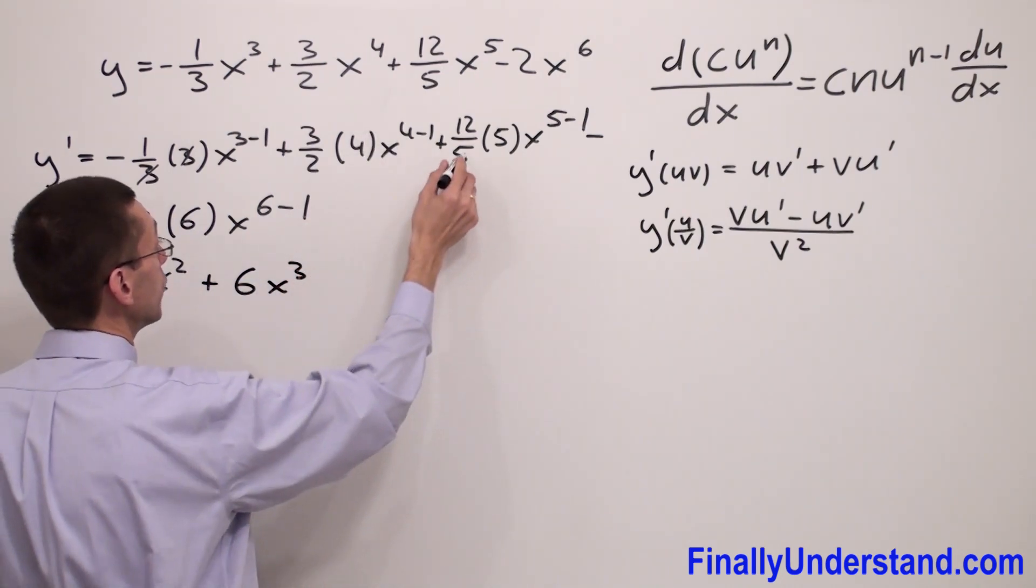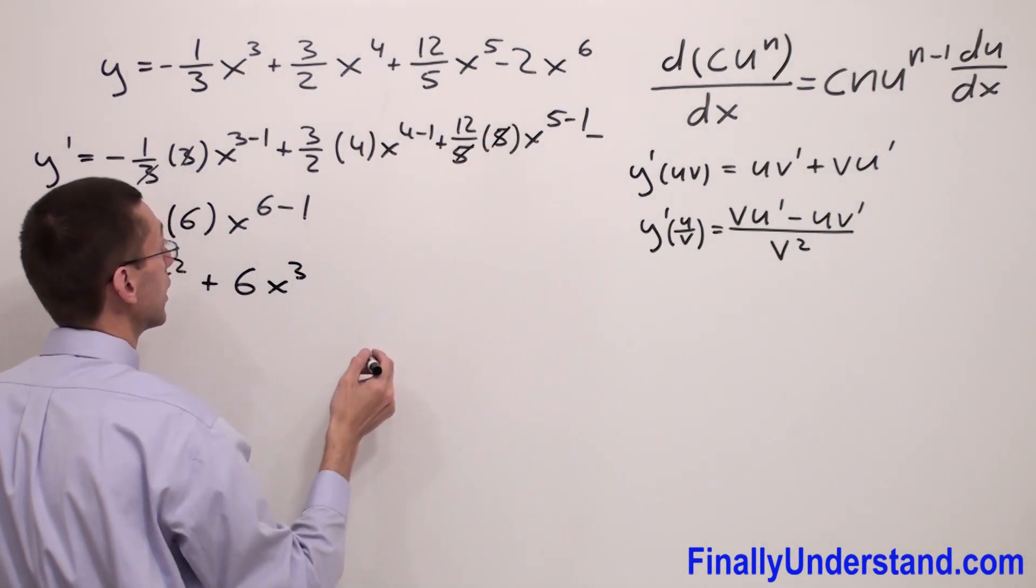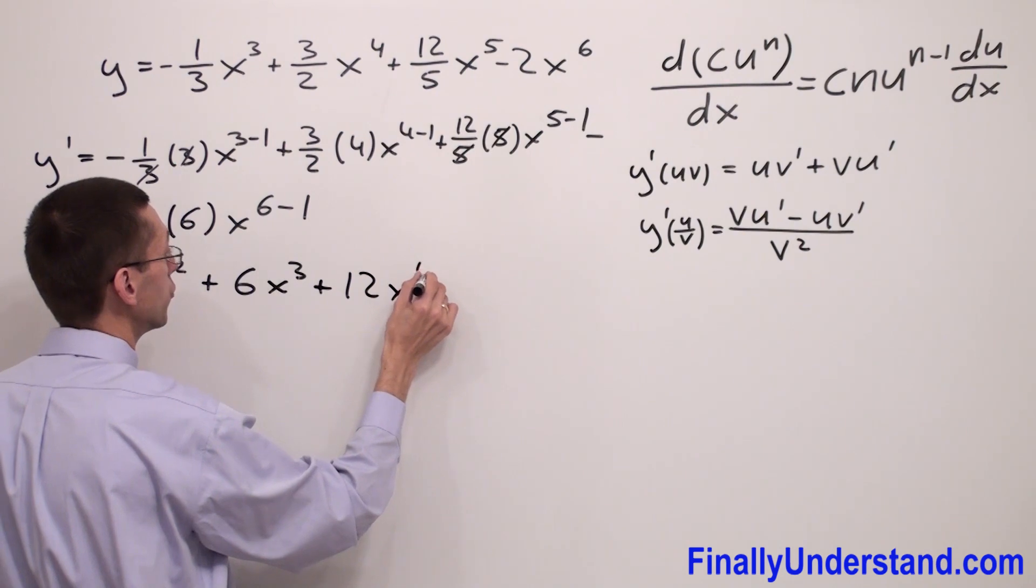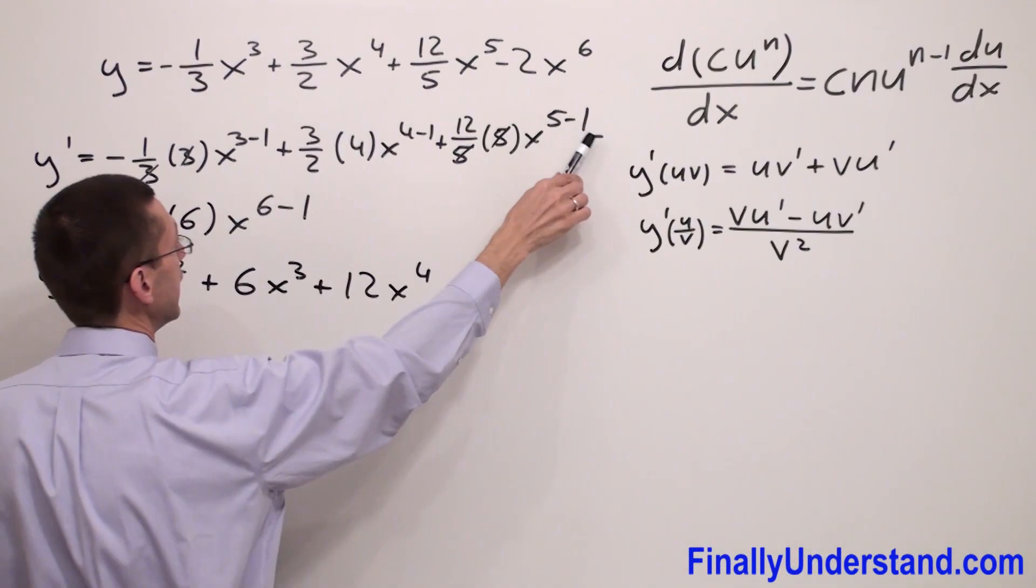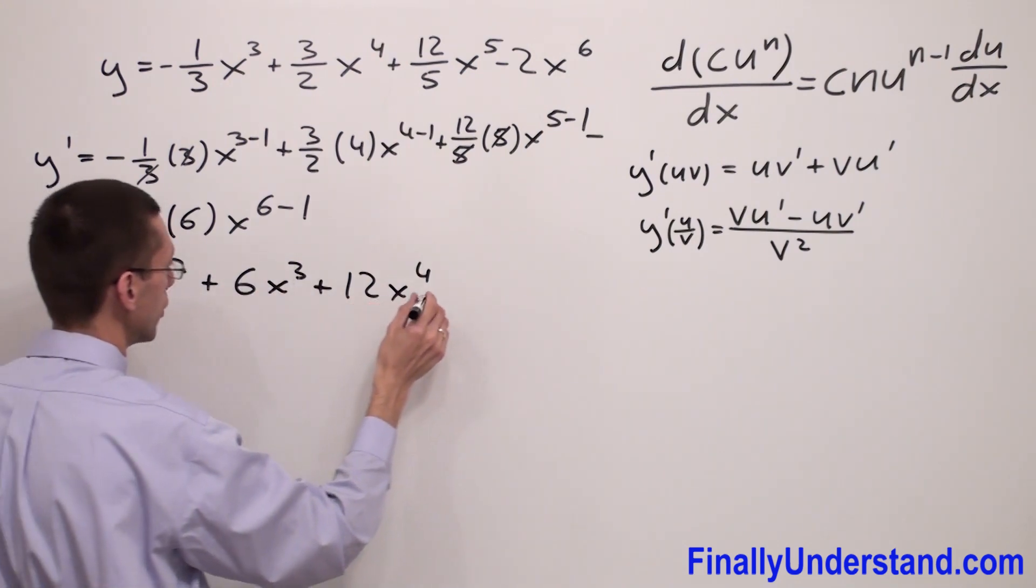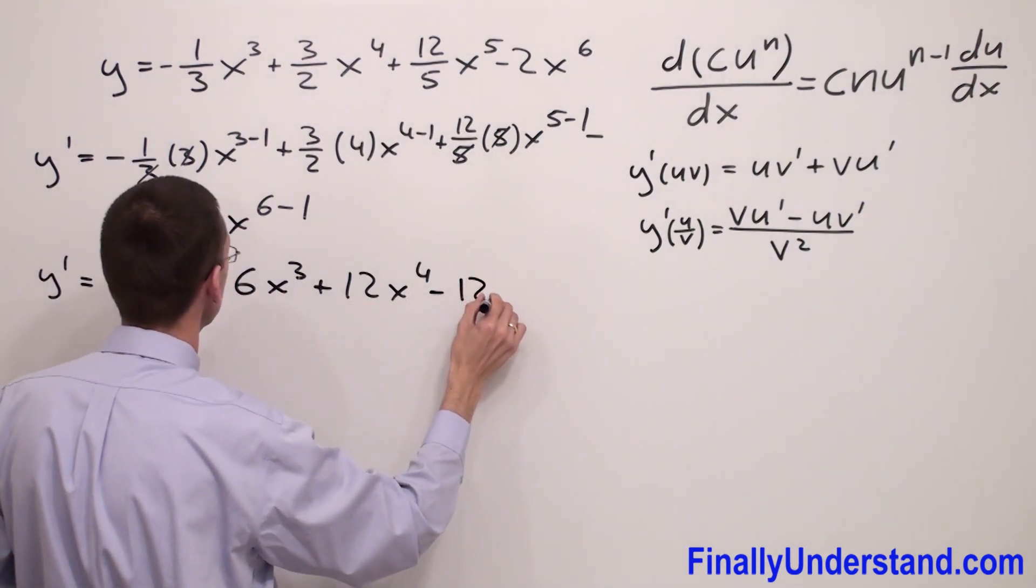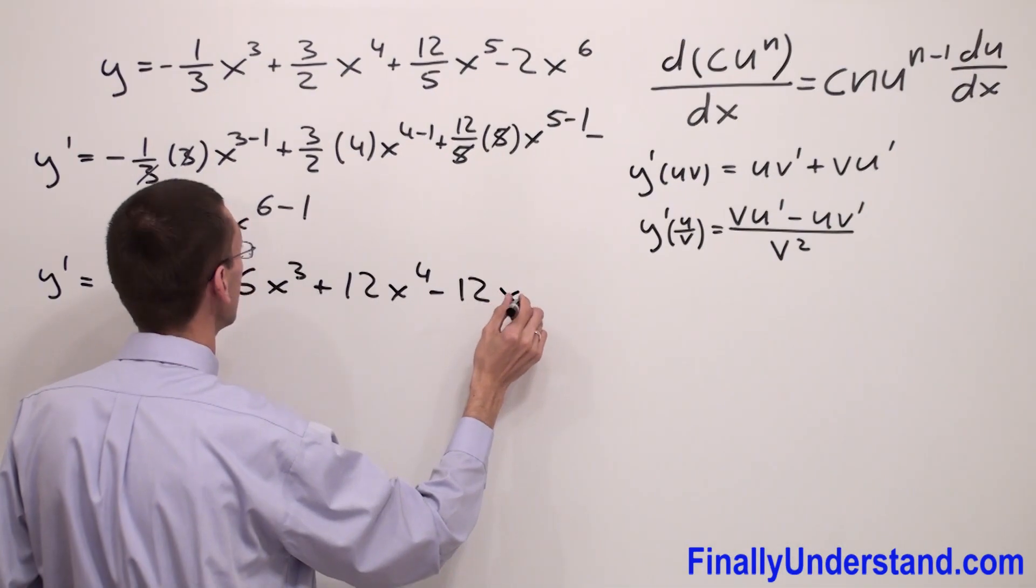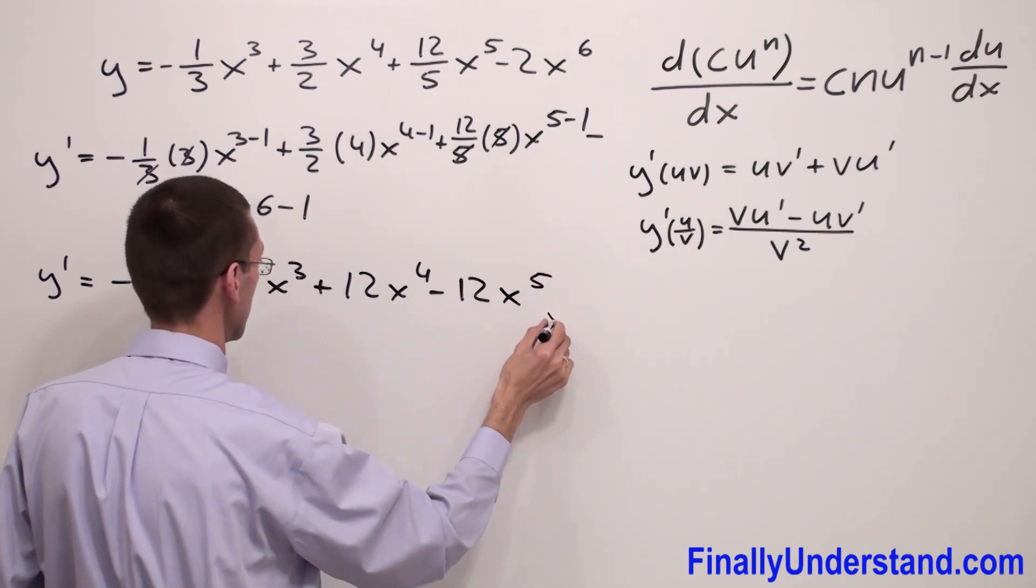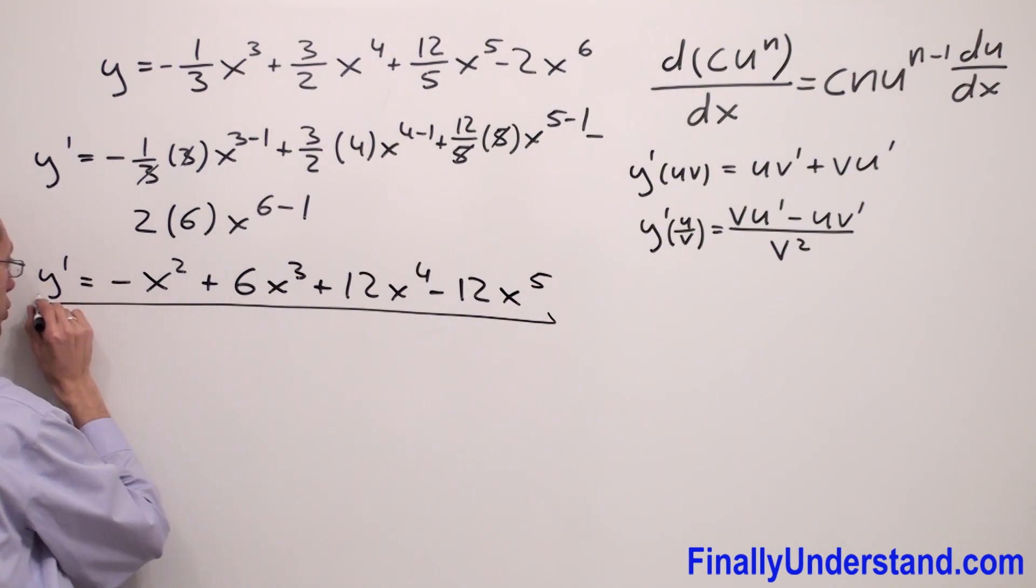5 and 5 will cancel out, so I have plus 12x to the 4th. Negative 2 times 6 equals negative 12x to the 5th power. And this is my solution to this problem.